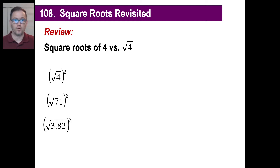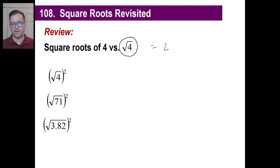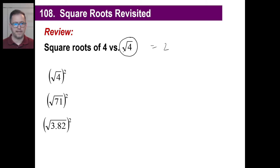Let's take a quick peek at square roots again. The first thing is, if you take the square root of 4, you can say that negative 2 times negative 2 is 4, and that 2 times 2 is 4. But generally when you see this, what they're referring to is the positive answer. So if you see the square root of 4, the answer is 2, even though negative 2 squared and positive 2 squared both give 4.